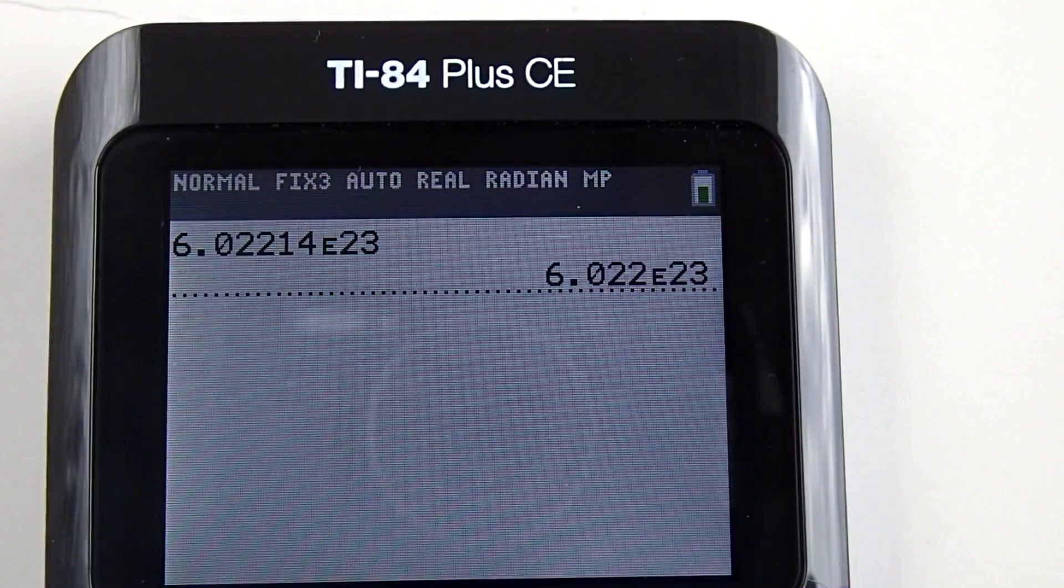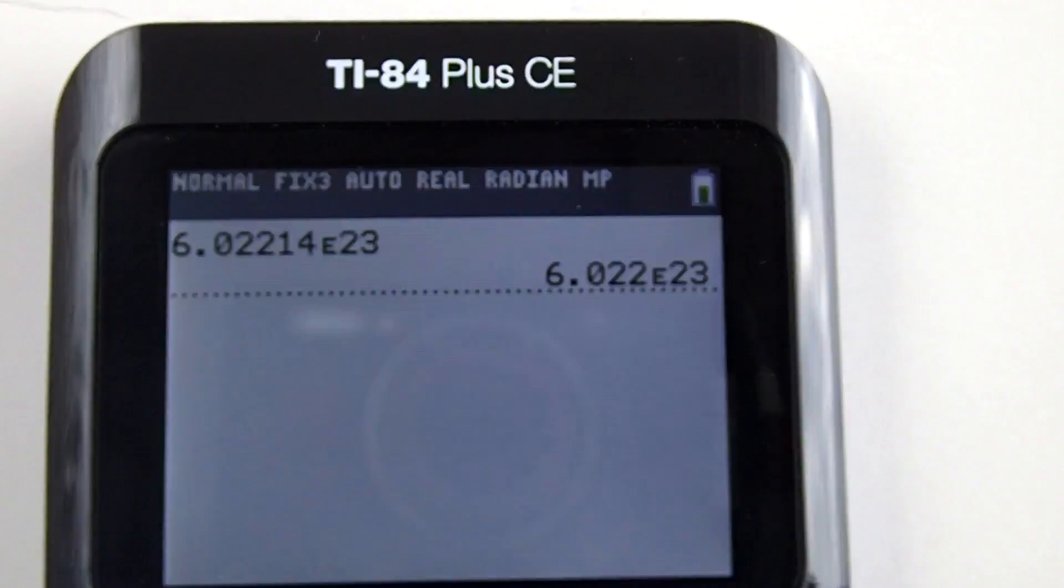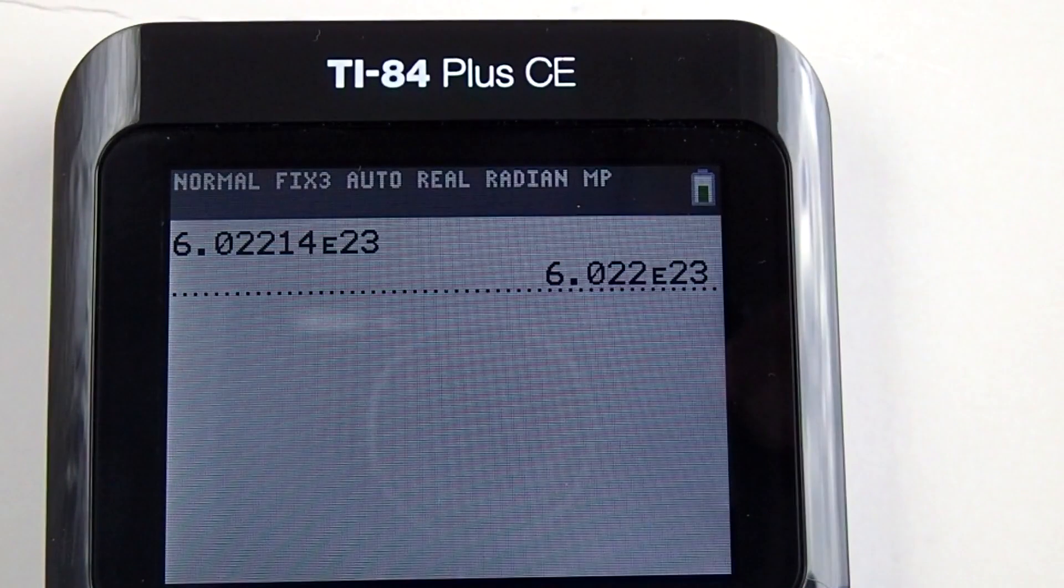My calculator displays 6.022E23, 3 decimals to the right of 6. That is because I have my decimal float adjusted to 3 decimals. You may want to change your decimal float depending on what type of problems you are working on.